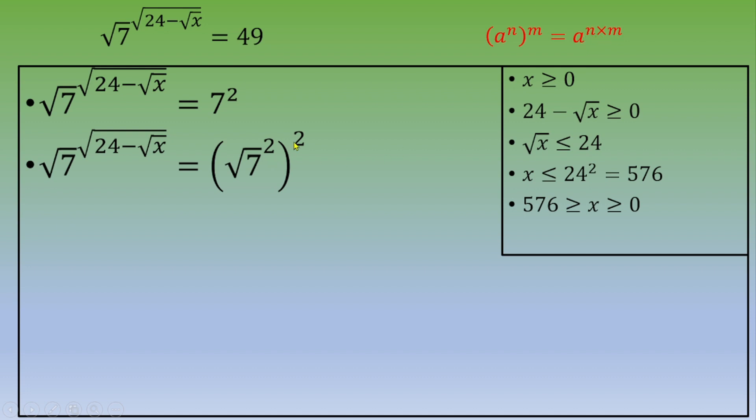Since 2 times 2 equals 4, applying the power function, we get √(24 - √x) = 4.